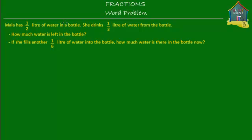Welcome to homecampus.com.sg. Here's a word problem for you. Mala has half a liter of water in a bottle. She drinks one third of a liter of water from the bottle. How much water is left in the bottle? And if she fills another one sixth of a liter of water into the bottle, then how much water is there in the bottle now?